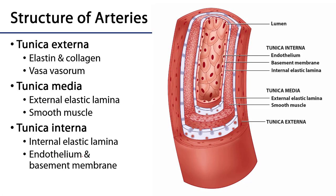Arteries and veins and all the vessels in between have differences in their microanatomy that relate to how they appear macroscopically. The best way to organize our thinking is to consider vessels as having three layers or tunics: the tunica externa, tunica media, and tunica interna.